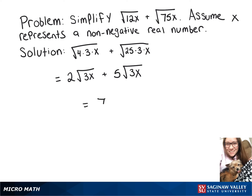Now, since 2 and 5 are both being multiplied by the square root of 3x, we can add them together, giving us our final answer, 7 times the square root of 3x.